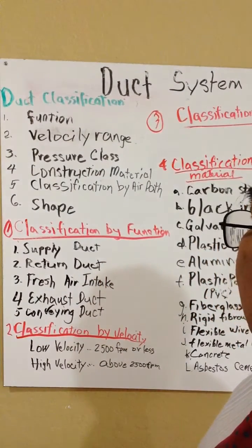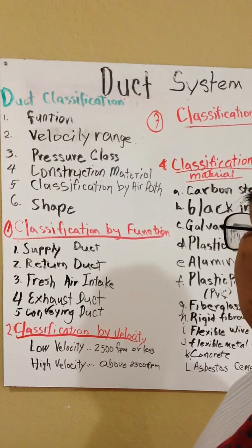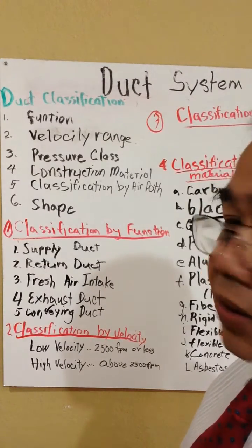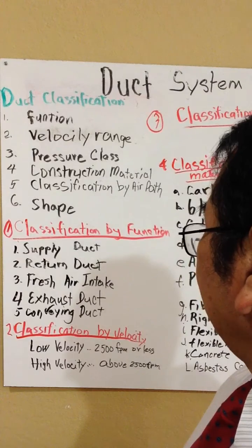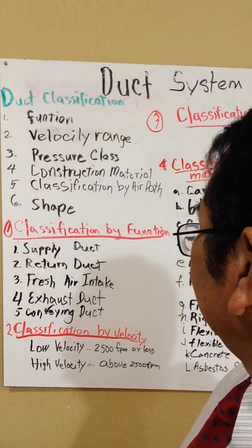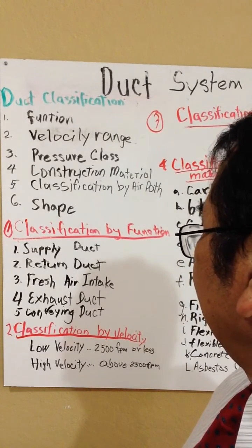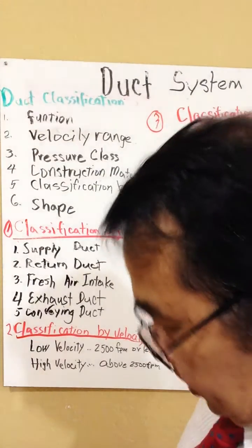If we go to the classification by function, we have the supply duct, the return duct, the fresh air intake duct, the exhaust duct, and the conveying duct.